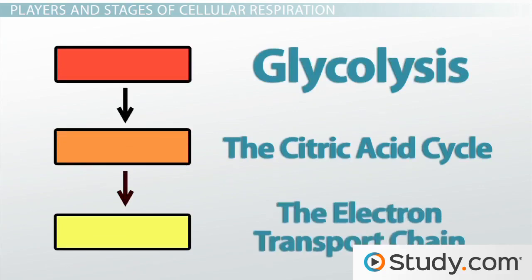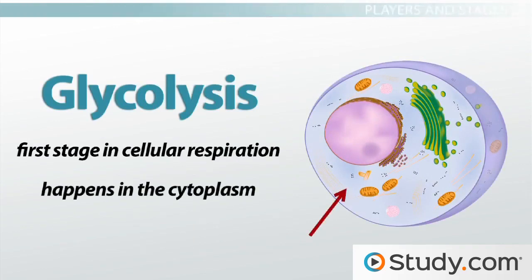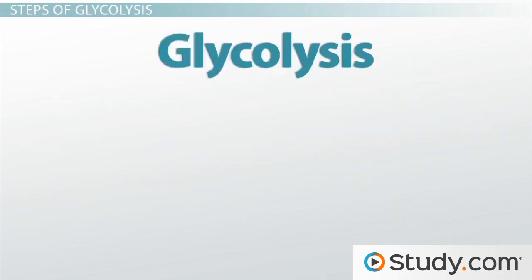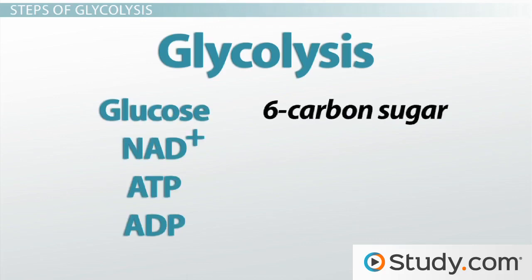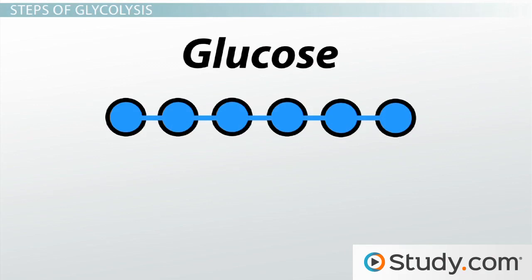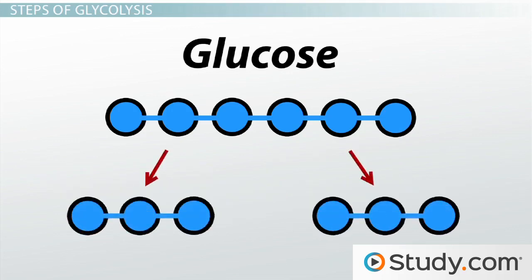In this lesson, we'll focus on what happens during glycolysis and how this feeds into the other stages. Glycolysis is the first stage in cellular respiration and happens in the cytoplasm. It uses the following molecules: glucose, NAD+, ATP, and ADP. Glucose is a six-carbon sugar. We can represent glucose as a six-carbon sugar by using six blue circles, one blue circle for each carbon. In glycolysis, glucose is broken down using ten enzymatic reactions to produce two three-carbon molecules of pyruvate. Essentially, glucose is split in half and rearranged a bit.